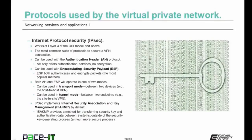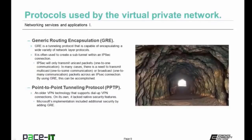Both AH and ESP will operate in one of two modes. The first is transparent mode — between two devices, as in a host-to-host VPN. Or they can be used in tunnel mode, which is between two endpoints, as in a site-to-site VPN. IPsec implements Internet Security Association and Key Management, ISAKAMP, by default. ISAKAMP provides a method for transferring security key and authentication data between systems outside of the security key generating process — it is a much more secure process. Then we have generic routing encapsulation, GRE, a tunneling protocol capable of encapsulating a wide variety of other network layer protocols. It's often used to create a sub-tunnel within an IPsec connection.